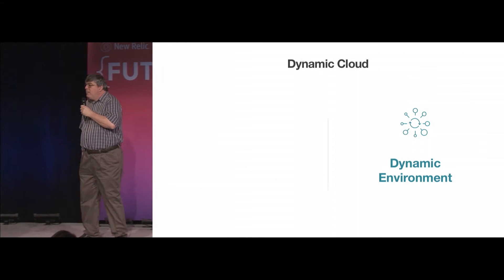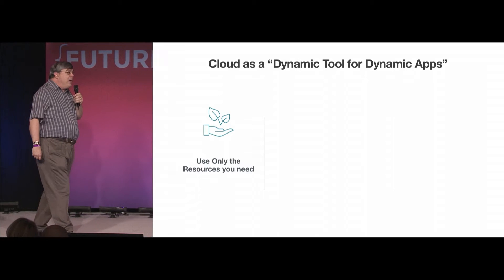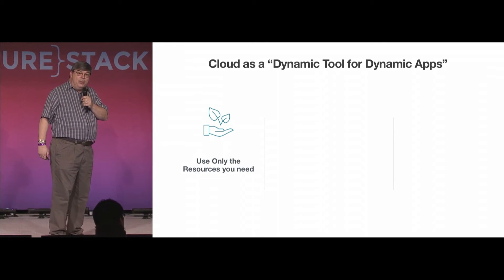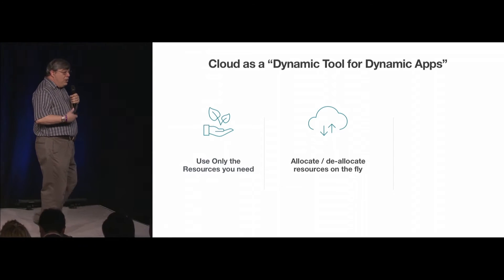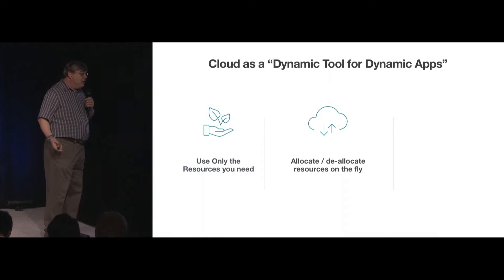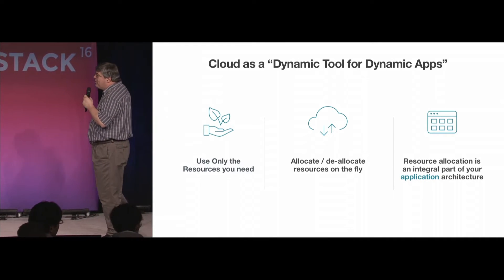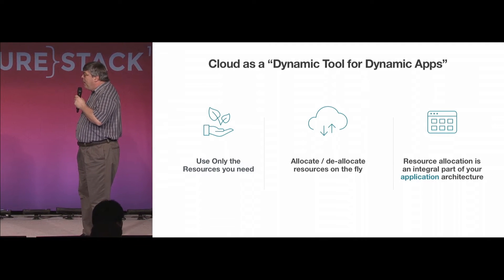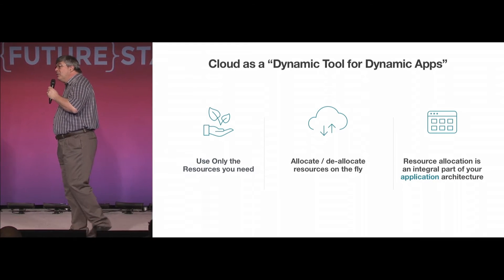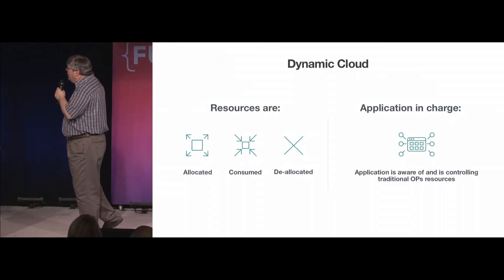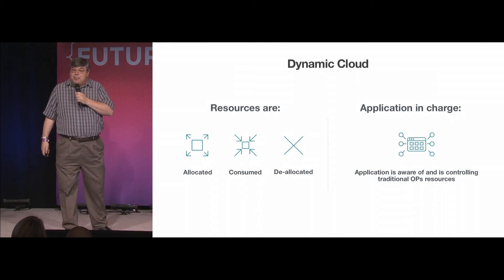So that's the better data center model. Let's talk about the dynamic uses of the cloud. When I talk about using the cloud as a dynamic tool, what I'm talking about is using cloud resources — but only the resources you need, when you need them. You allocate and deallocate resources on the fly rather than allocating EC2 instances for a static purpose that lasts a long time. You only allocate what you need when you need it, and you terminate them when you're done. Resource allocation starts to become an integral part of the application architecture itself, and the application cares where those resources are located.